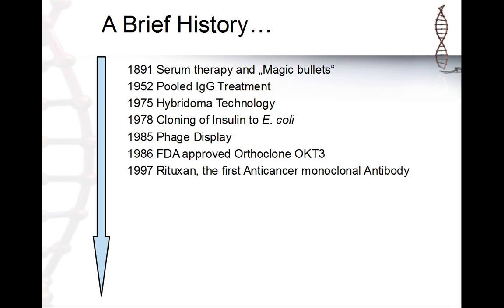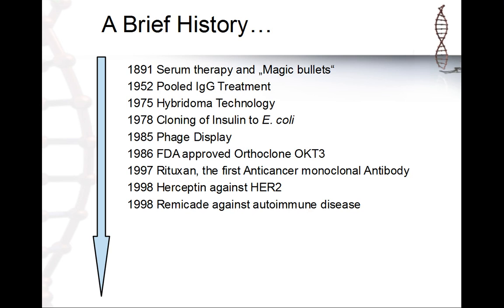In 1997, Rituxan was the first anti-cancer monoclonal antibody to come to the market. Then Herceptin against breast cancer came one year later, and Remicade against autoimmune disease came to the market. Definitely one of the amazing projects of human beings was the six-billion-dollar mouse by Abgenix.